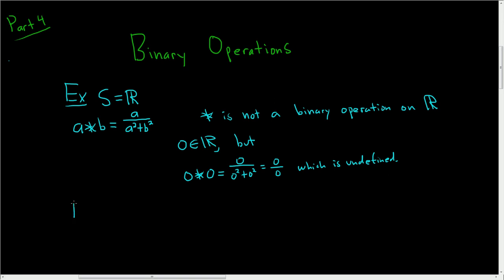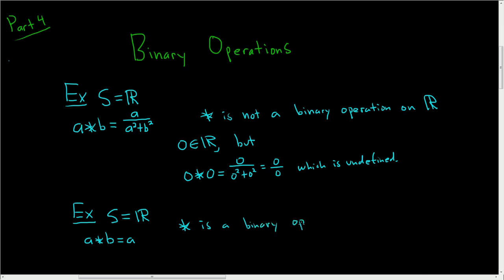Let's look at another example. We'll stick with the same set, so S equals the set of real numbers, and we're going to define star as follows: given two real numbers a and b, we'll star them and we'll just get a. In this case, star is a binary operation on the set of real numbers.